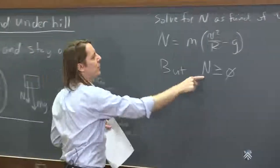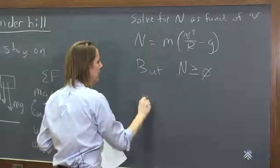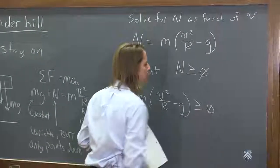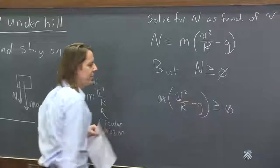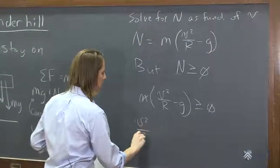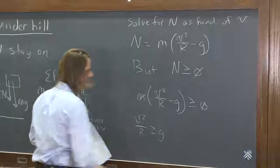Well, if this is always greater than or equal to zero, then this must always be greater than or equal to zero. And you cancel the m because it's zero on that side. And you say, oh, v squared over r must be greater than or equal to g.